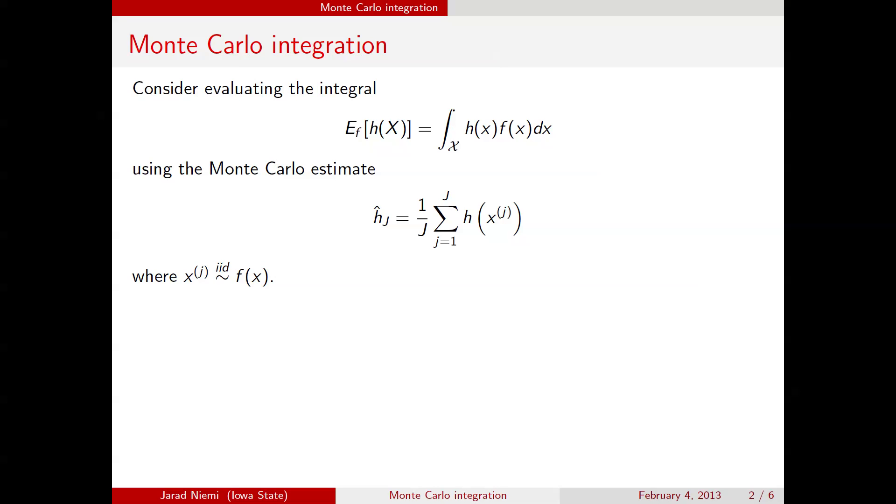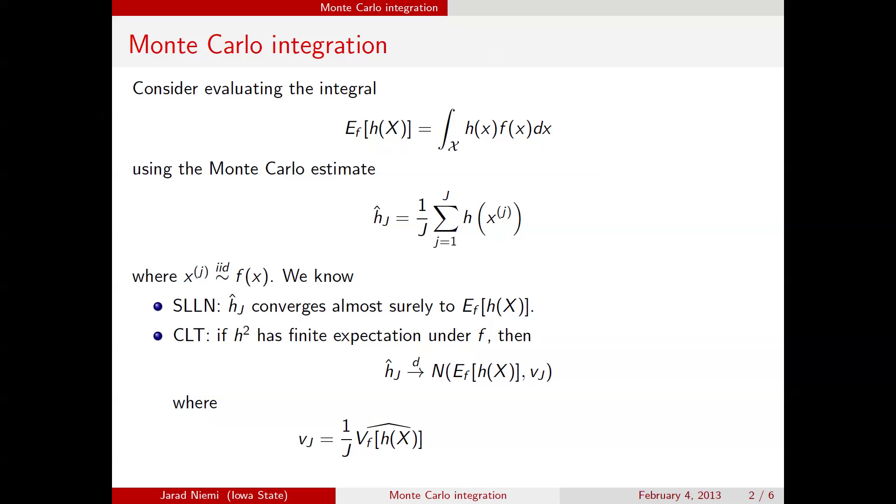Now we know a couple of pieces from probability theory that are going to help us understand how good this Monte Carlo estimate is. The first thing that we know is that that Monte Carlo estimate converges almost surely to the quantity that we're trying to estimate due to the strong law of large numbers. The second thing that we know is that if h has a finite expectation under f, then we know that the Monte Carlo estimate that we're calculating converges in distribution to a normal distribution centered at the quantity that we're trying to estimate and with some variance vj. We're going to estimate this variance using the empirical estimate of the variance of our h's divided by the number of samples we've taken. Often we refer to this as the standard error of the estimate.